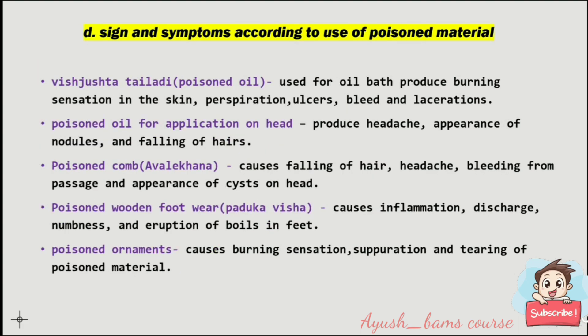Signs and symptoms according to use of poisoned material: poisoned oil can produce burning sensation in the skin, ulcers, bleeding, and lacerations. Poisoned oil applied on the head produces headache, appearance of nausea, and falling of hair. Poisoned comb causes falling of hair, headache, and bleeding. Poisoned wooden footwear causes inflammation, discharge, numbness, and eruption of boils in the feet. Poisoned ornaments cause burning sensation and tearing.